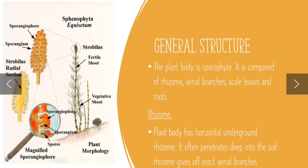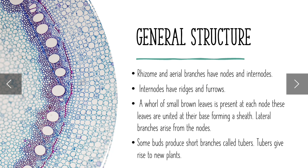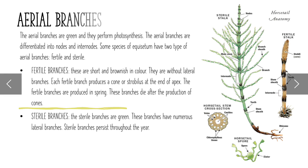The rhizome is a horizontal underground structure. It often penetrates deep into the soil. The rhizome gives rise to erect aerial branches. Both the rhizome and aerial branches have nodes and internodes. Aerial branches are green and they perform photosynthesis.